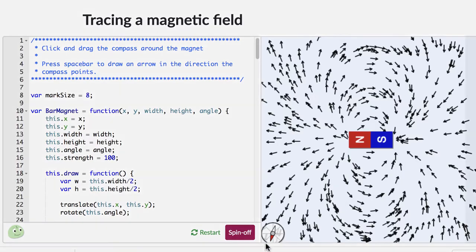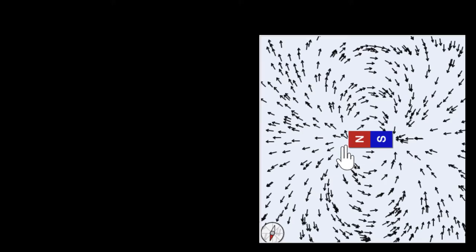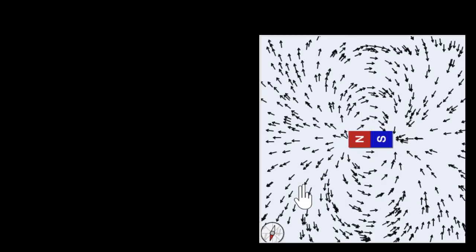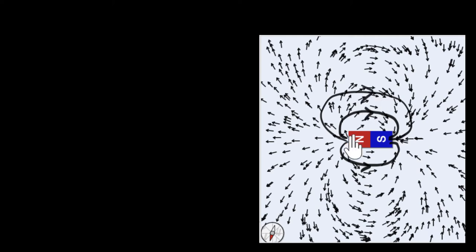Looking at the picture carefully, an interesting pattern has developed. All the arrow marks are pointing away from the North, and they slowly turn and point towards the South. So the way we represent the magnetic field today is by drawing continuous lines — not arrow marks — but continuous lines that start from the North and move towards the South, with an arrow mark representing the North to South direction. This is how we represent magnetic fields today: from North to South.